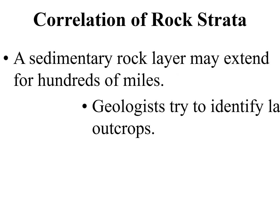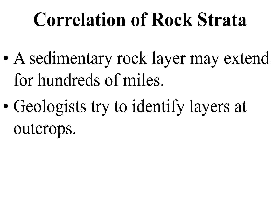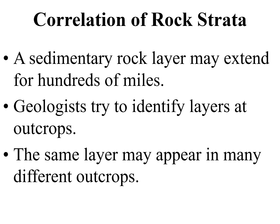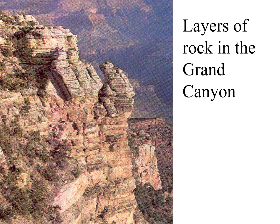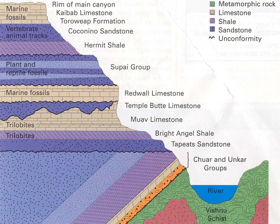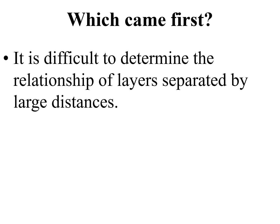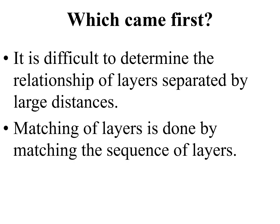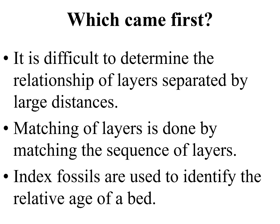A sedimentary rock layer may extend for hundreds of miles. Geologists try to identify the layers at outcrops — the same layer may appear in many different outcrops. At the Grand Canyon, it's almost impossible not to follow layers around the canyon and notice that layers on one side correlate with layers on the other. It's difficult to determine the relationship of layers separated by large distances, so matching is done by the sequence of layers, rock type, and index fossils.